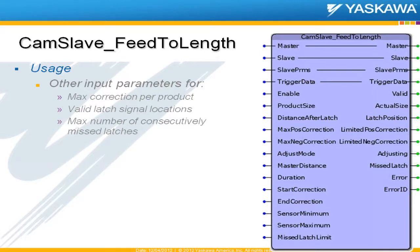We want to restrict the place where a good sensor signal is to be found. And if we do miss latches, we want to alert the system. So if your printing dries out, your registration marks disappear, the sensor gets knocked out of alignment — something's wrong with the process and you're making bad product. You want to know when that happens so you can stop the process, and we do that with our miss latched limit and then a miss latched output.